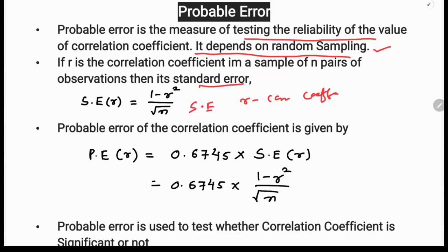Using the standard error, we can find the probable error. The probable error of the correlation coefficient is given by P.E. equals 0.6745 times the standard error. This constant value 0.6745 is always used. So the formula becomes 0.6745 times one minus r squared divided by square root of n.